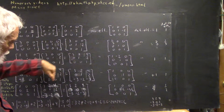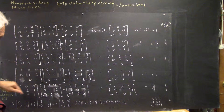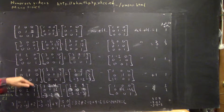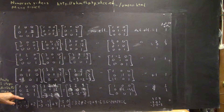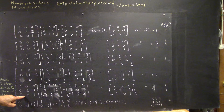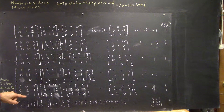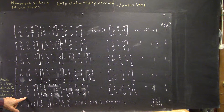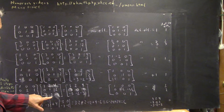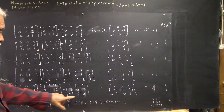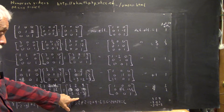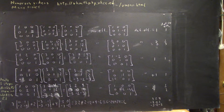Then we'll take this matrix and multiply it by this — this isn't really an elementary matrix, it's a product of two elementary matrices, but we'll shortcut it just a little bit. And we multiply that to get this matrix.